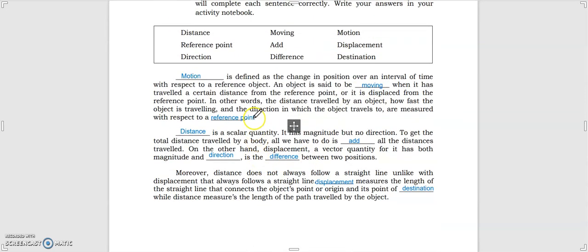Let's proceed to the 'What I Have Learned' portion. Motion is defined as the change of position over an interval of time with respect to a reference point. An object is said to be moving when it has traveled a certain distance from the reference point or is displaced from the reference point. The distance traveled, how fast the object is traveling, and the direction in which the object travels are all measured with respect to a reference point.